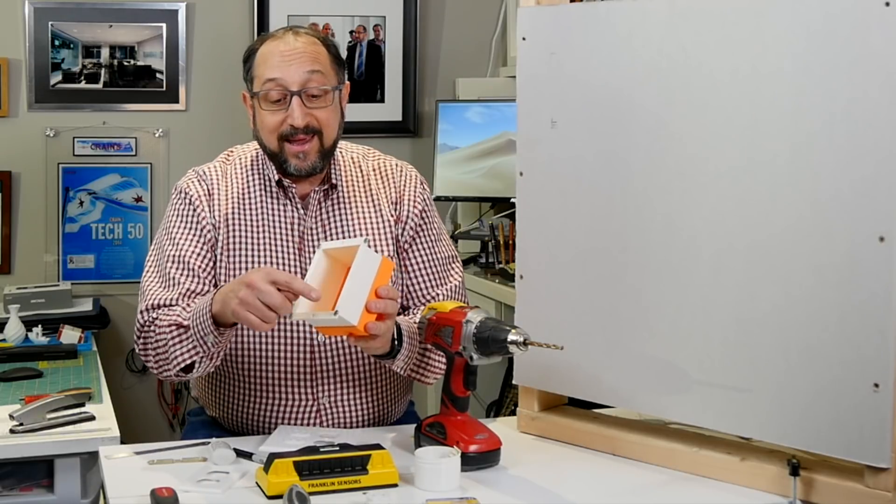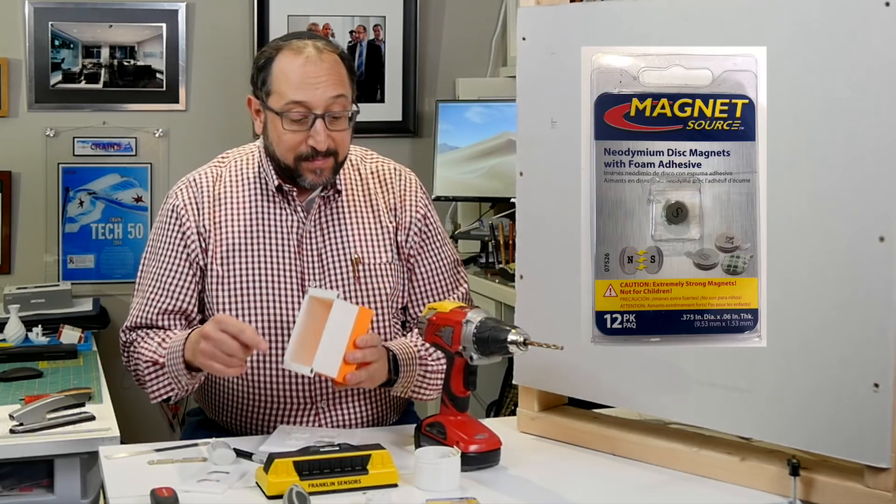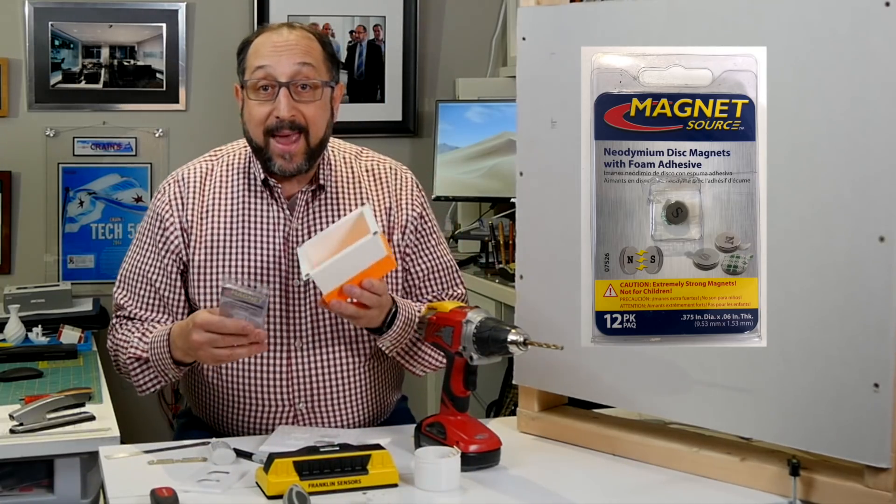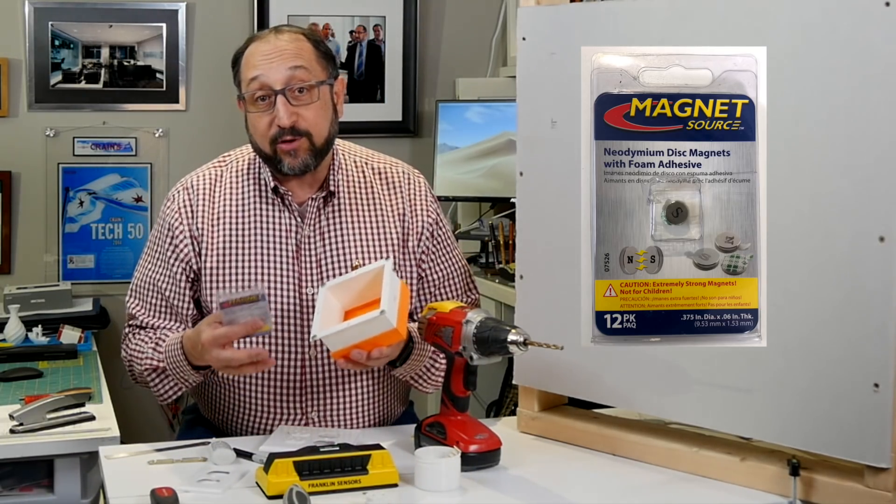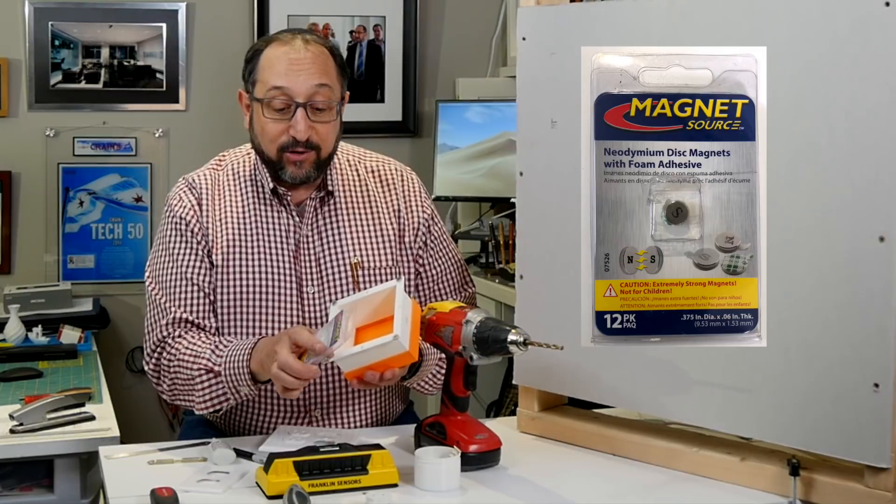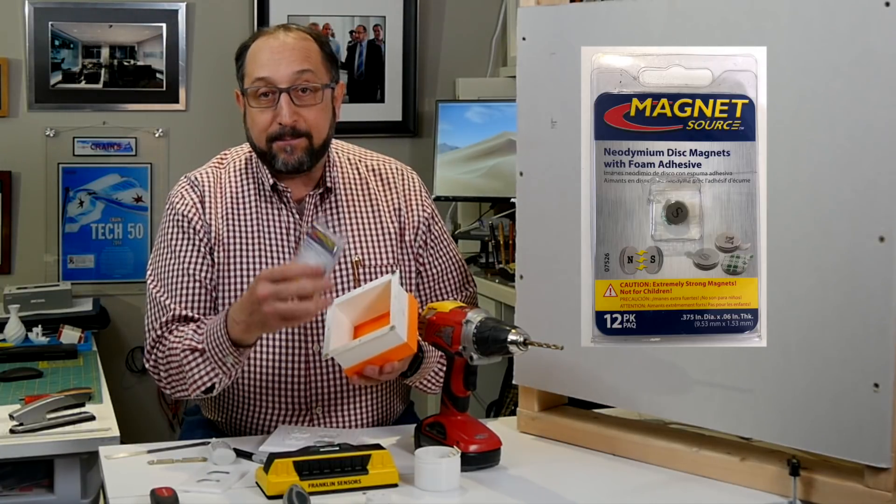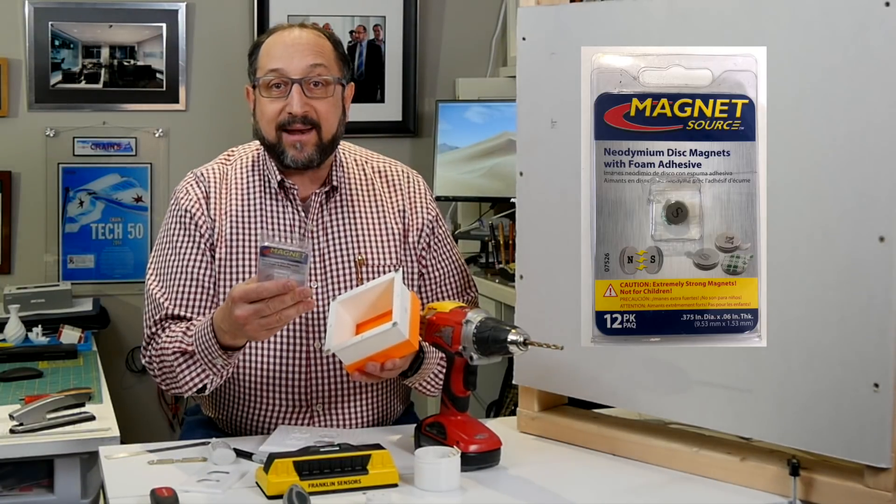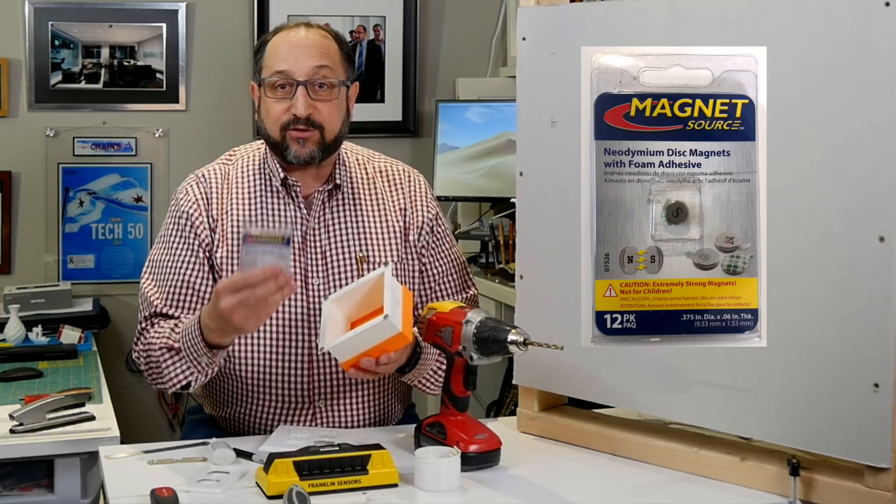The next thing you'll need is 8 magnets. Now when you go to buy magnets, there are two different types you'll see. You'll see ceramic magnets and you'll see neodymium magnets. The neodymium magnets are significantly stronger.